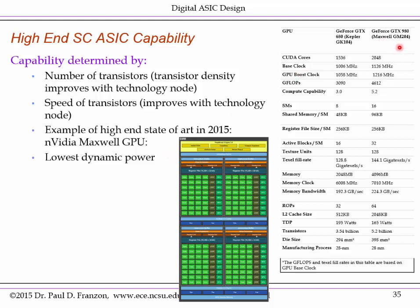The top end of the Maxwell GPUs operates at a bit over 1 GHz, can deliver 4.6 teraflops, has a lot of onboard memory — several hundred K of SRAM — and has 5.2 billion transistors in a very large chip, produced in the current high-volume production advanced node at 28 nm.